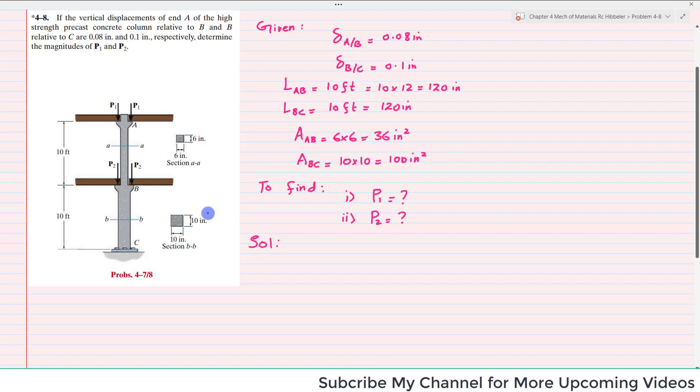The normal force developed in segment AB and BC can be found by using the free-body diagram. First we will section it along the length of AB and we will draw the free-body diagram for AB. We can see here we have load of P1 and P1, this is point A.